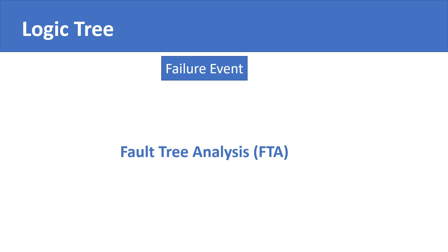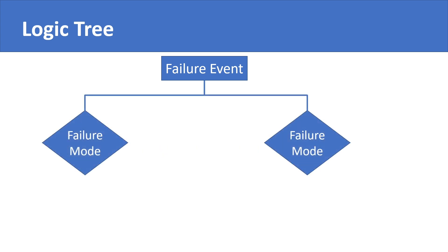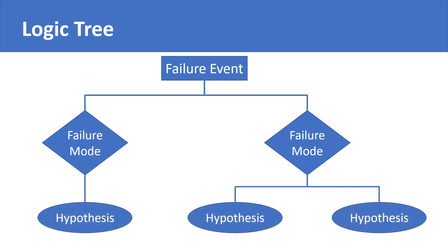The failure event is represented by a dedicated node, which in our case is a rectangular block. The failure event could have been caused by one or more failure modes. We represent failure modes with dedicated nodes, which we have chosen as diamond shapes. We then consider what could be the reasons or events that resulted in the occurrence of these failure modes. These hypotheses are represented by dedicated nodes, which we have chosen as oval shapes.